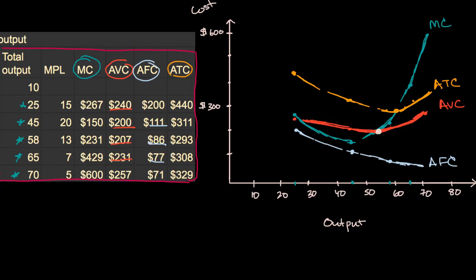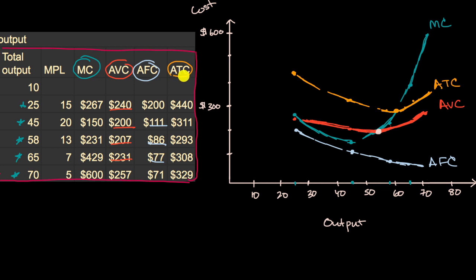In the last video, we numerically studied how changes in productivity or cost might affect your marginal cost, your average variable cost, your average fixed cost, or your average total cost. In this video, we're going to think about it visually.